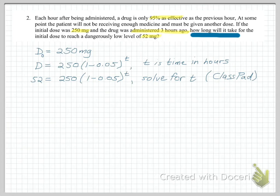We're interested in it reaching 52 milligrams. Now you can solve for T using class pad, and the result is 30.61 hours. Here, hopefully you realize that we started 3 hours ago, so we need to subtract 3 hours from that time to reach the level. So the final answer is 27.61 hours.